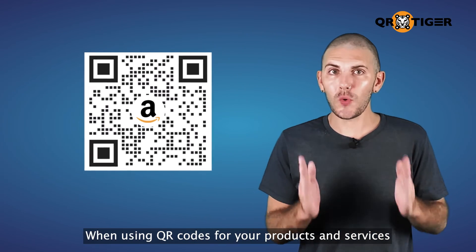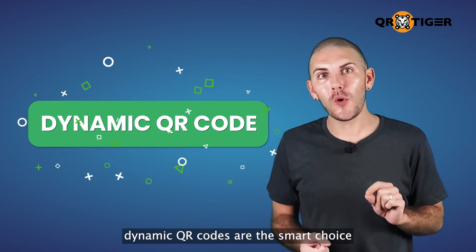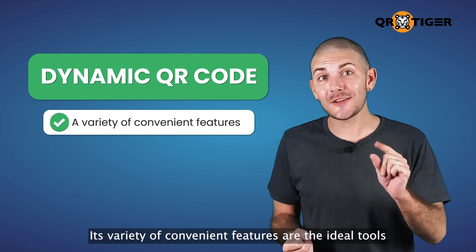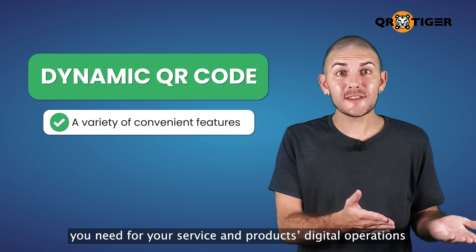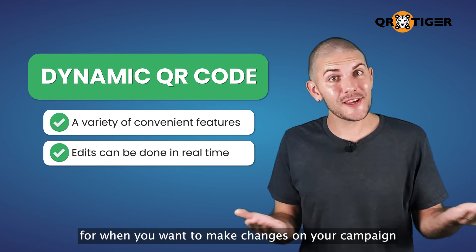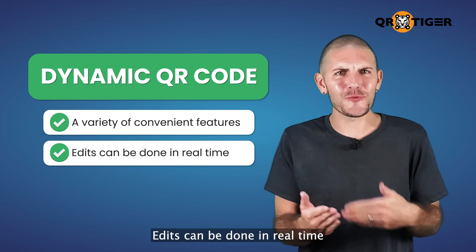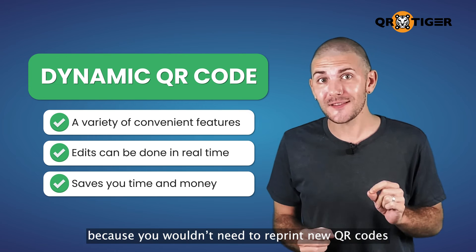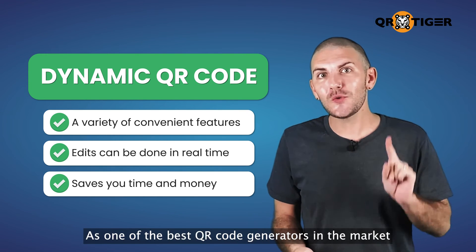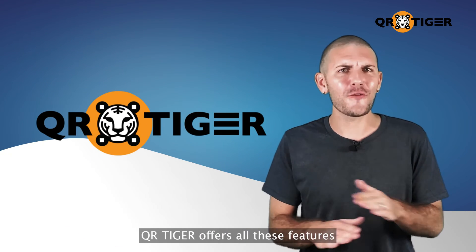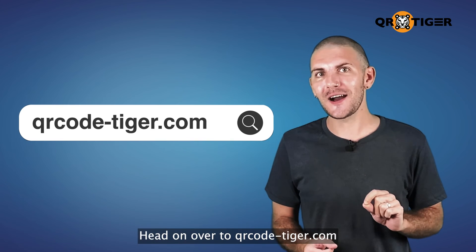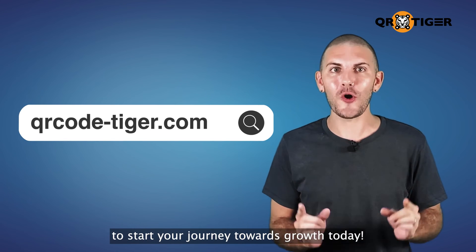When using QR codes for your products and services, dynamic QR codes are the smart choice. Its variety of convenient features are the ideal tools you need for your service and product's digital operations. It's especially helpful when you want to make changes to your campaign — edits can be done in real time, and it also saves you time and money because you wouldn't need to reprint new QR codes. As one of the best QR code generators in the market, QR Tiger offers all these features and more. Head on over to qrcode-tiger.com to start your journey towards growth today.